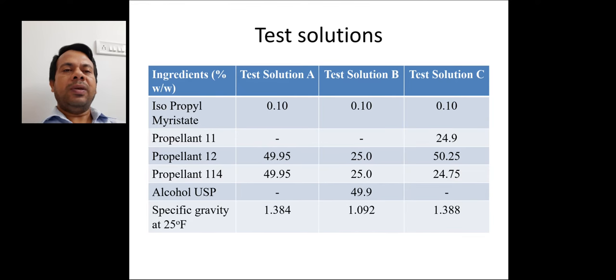Alcohol USP is only present in test solution B in a concentration of 49.9% W by W. Specific gravity of test solution A, B and C at a temperature of 25 degrees Fahrenheit are respectively 1.384, 1.092 and 1.388.